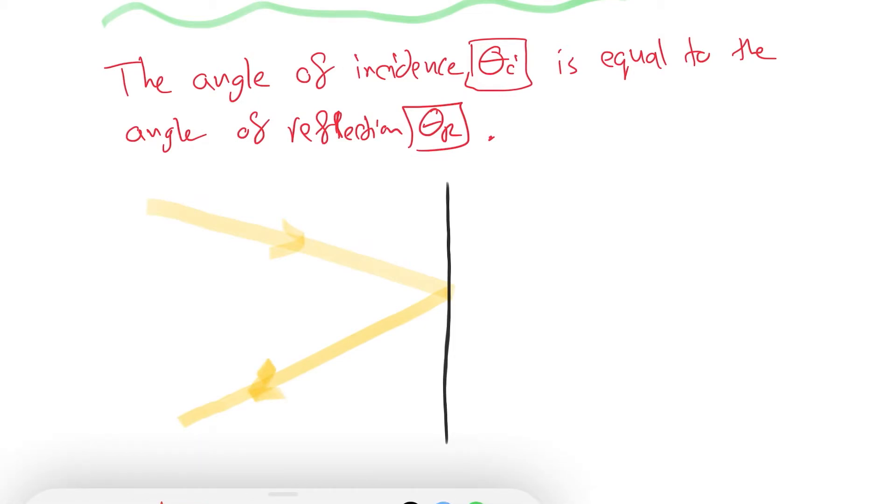We're going to draw an imaginary line in the middle. We call it the normal line. This is the angle of incidence.